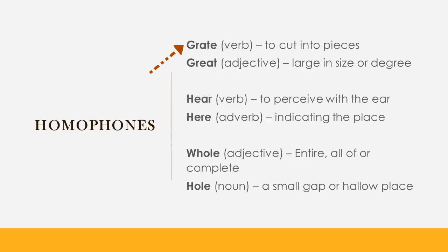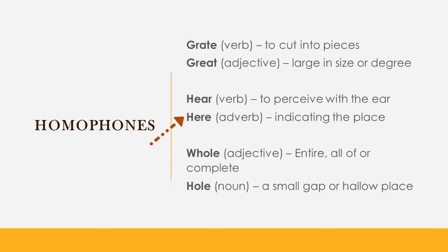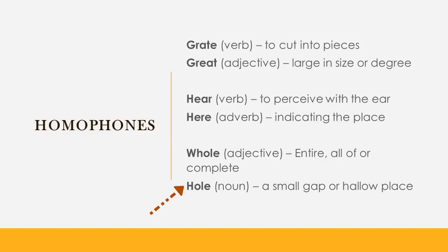More homophone examples: 'grate' (G-R-A-T-E) means to cut into pieces, and 'great' (G-R-E-A-T) means large in size or degree. 'Hear' (H-E-A-R) means to perceive with our ears, and 'here' (H-E-R-E) indicates a place. 'Whole' (W-H-O-L-E) means entire or complete, and 'hole' (H-O-L-E) means a small gap or hollow place. All these pairs share the same pronunciation but differ in spelling and meaning.